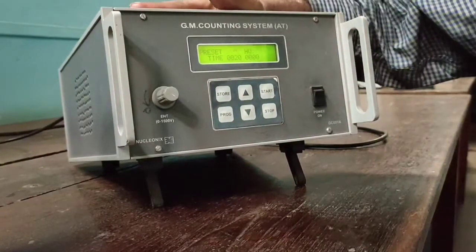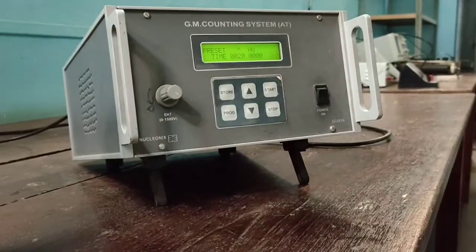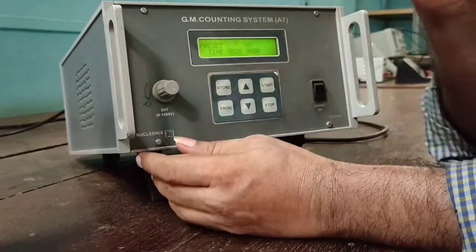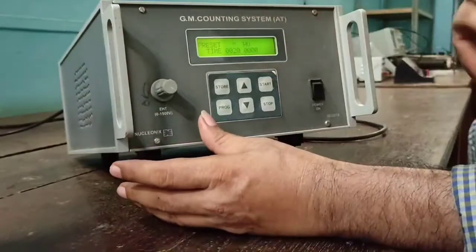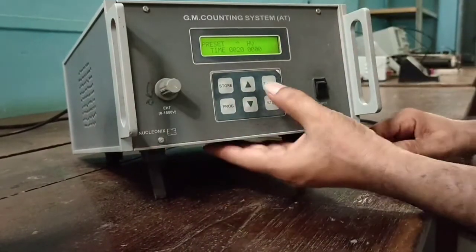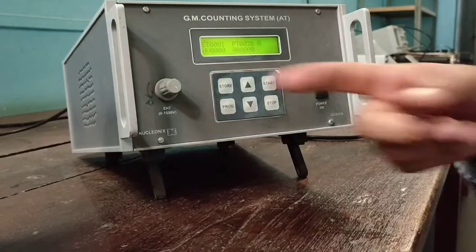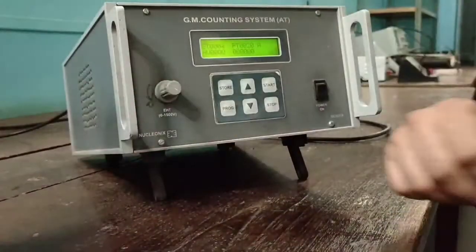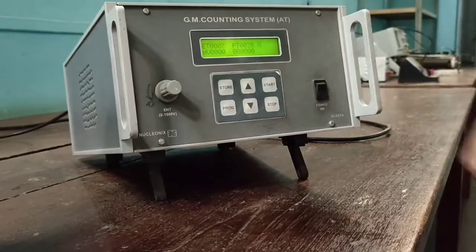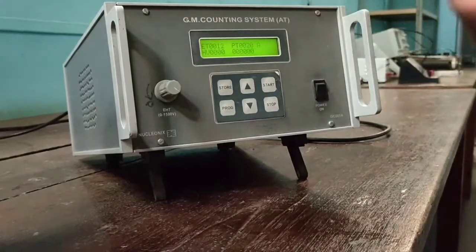So counter is able to record the particle up to the time 20 seconds. Now applied voltage. See actually, you have to find out the counts versus applied voltage. What is the voltage applied now? 0. So I will start now. Once you start, the emitted beta particles that are entered in 20 seconds will be counted by the GM counter.